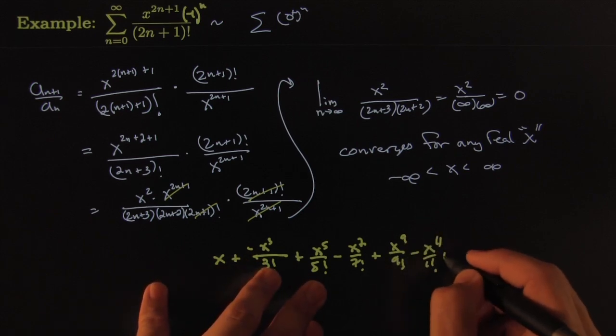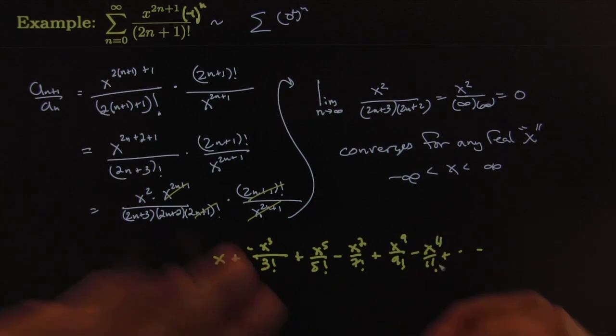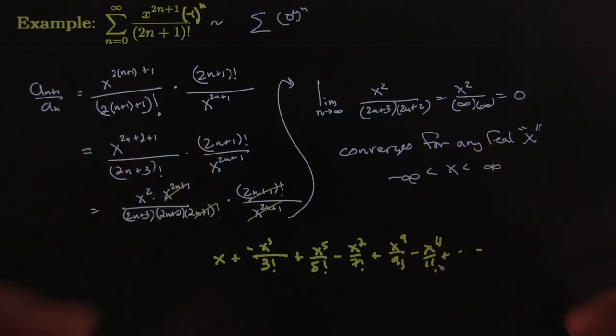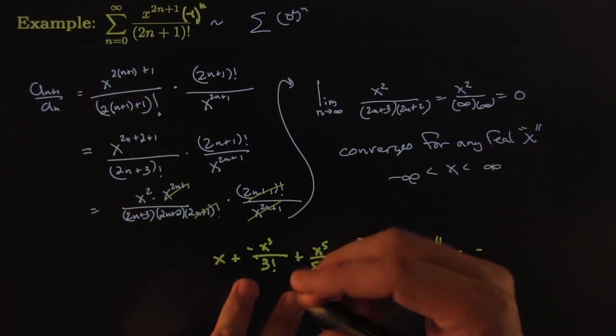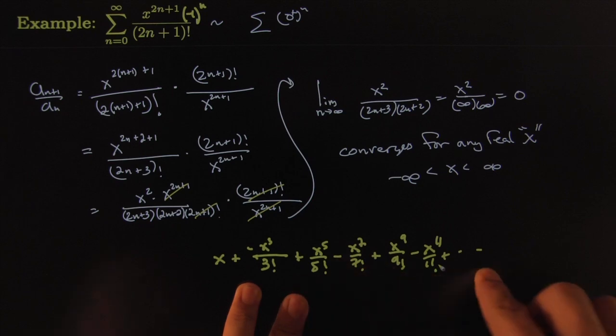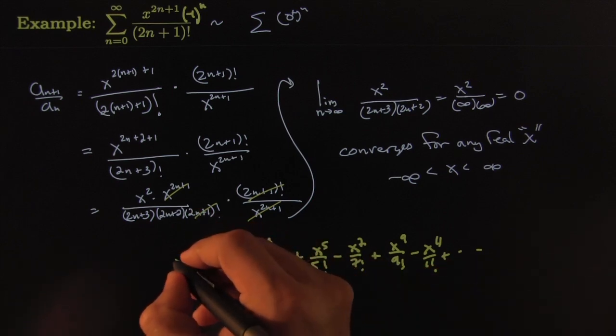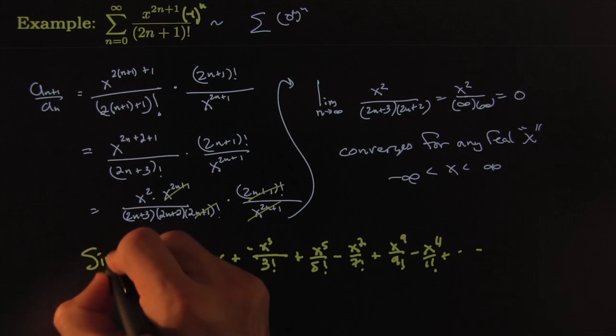This would be 9 over 9 factorial minus x to the 11 over 11 factorial, etc. If you were to continue on this, I was trying to advertise the bridge earlier. This is such a huge idea. This baby right here is a long polynomial—it's really, really long. It's actually even longer.